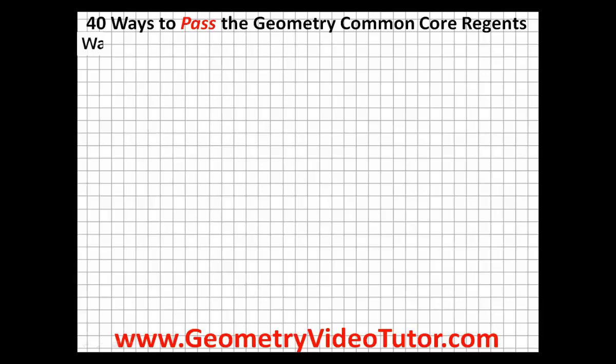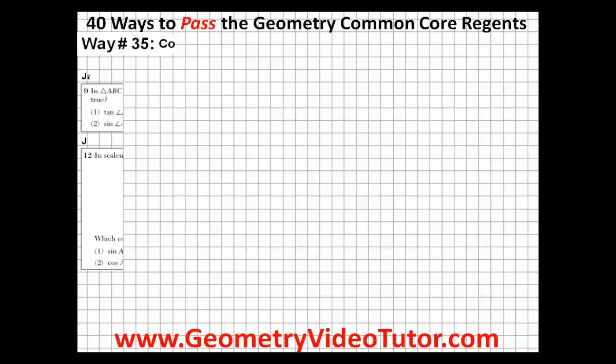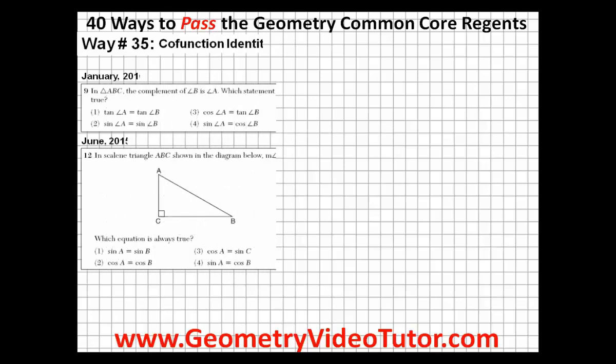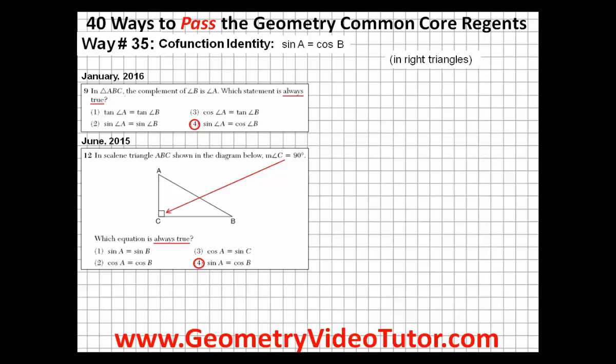Way number 35 on how to pass the geometry common core regents. The one cofunction identity that you need to know that is always true is the sine of A is equal to the cosine of B, especially in right triangles where angles A and B are complementary, meaning they add up to 90 degrees.